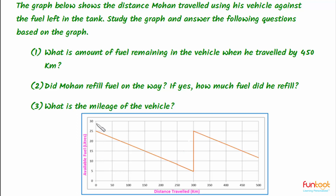The positive direction of the y-axis represents available fuel in liters. In the first part, the amount of fuel keeps on decreasing as the vehicle keeps on moving. We want to find the amount of fuel remaining in the vehicle when it has traveled 450 kilometers.